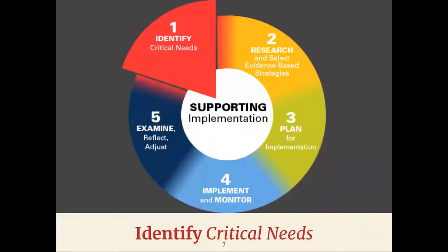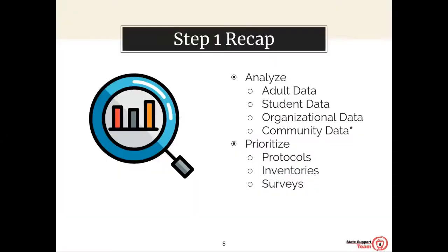Step one in the OIP process is to identify critical needs. The DLT will analyze data and prioritize needs based on various types of data, which may include adult data, student data, organizational data, and community data. The DLT will prioritize needs based on utilizing protocols, inventories, or surveys. The DLT, BLT, or CSLT, and TBTs play crucial roles in identifying critical needs at their level.